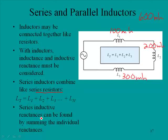Series inductive reactances can be found by summing the individual reactances. We have the individual inductances, but we need to know the frequency. Remember, inductive reactance XL equals 2πf times the inductance. We could calculate the reactance of each and add them up.